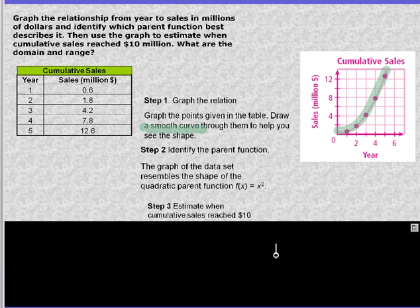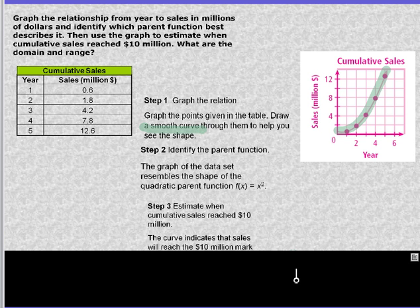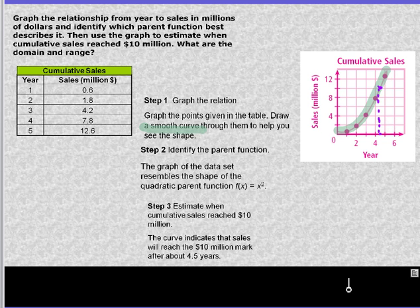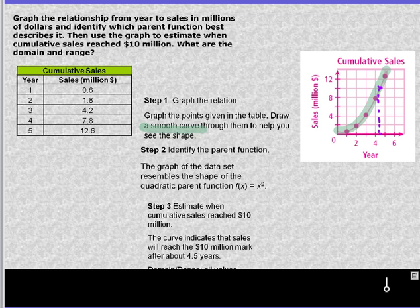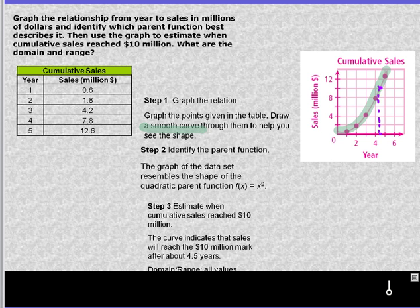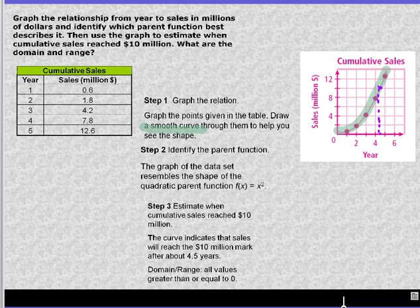Step three, estimate when we reach $10 million. We're going to use our curve. $10 million is right here. When is that? That is about 4.3, 4.4 years, they say 4.5. What's our domain? What values can our x take on? We can't have negative years, so it's going to be greater than or equal to zero. And in terms of our range, we can't have negative money, so it's also going to be greater than or equal to zero.